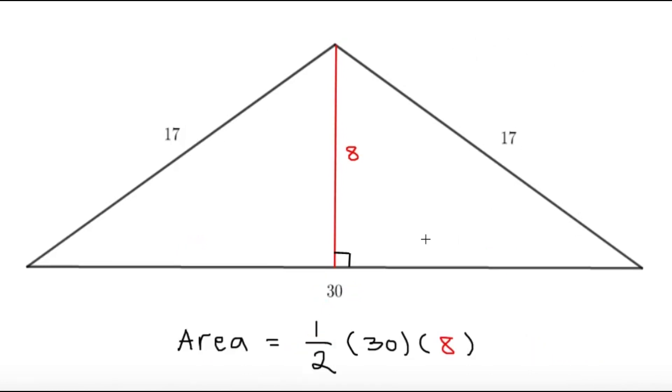After we get that h is 8, all we have to do is substitute it back to our formula: area equals one-half times the base times the height. We can use 30 for the base and 8 for the height.